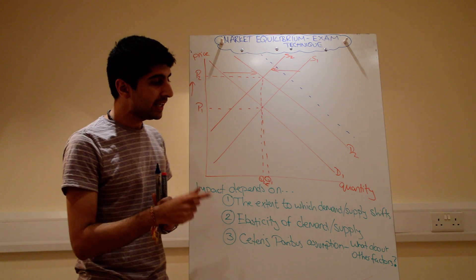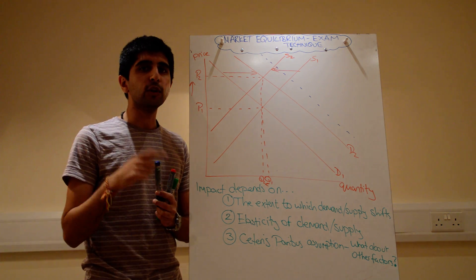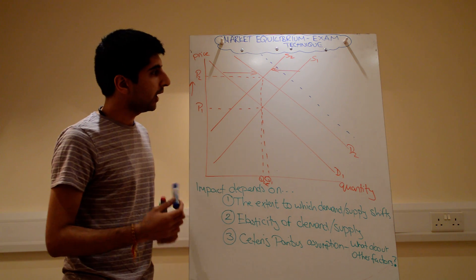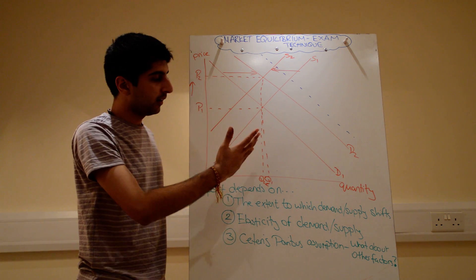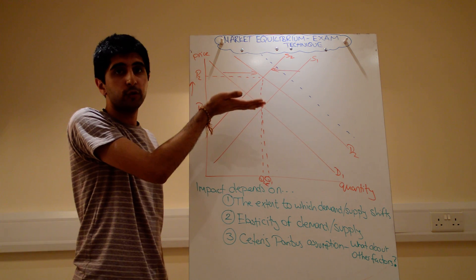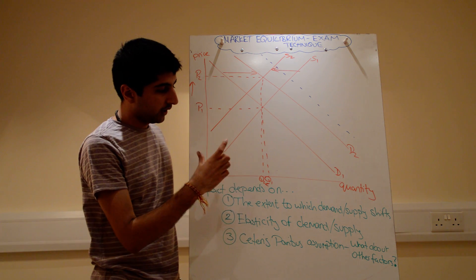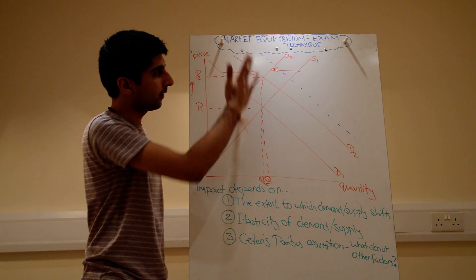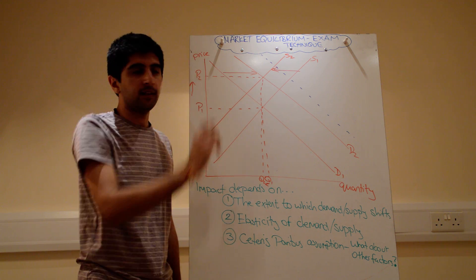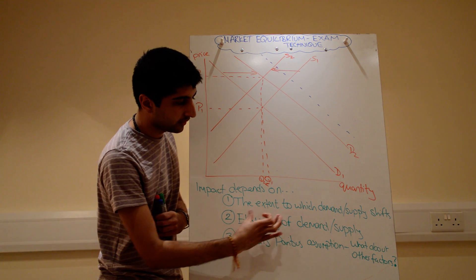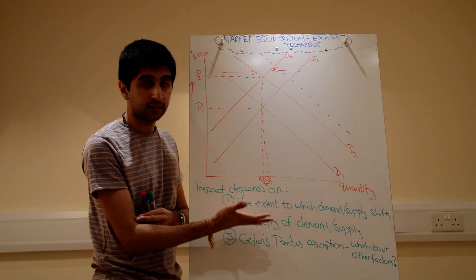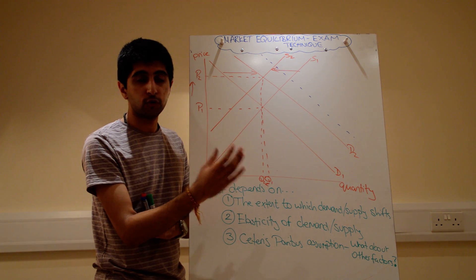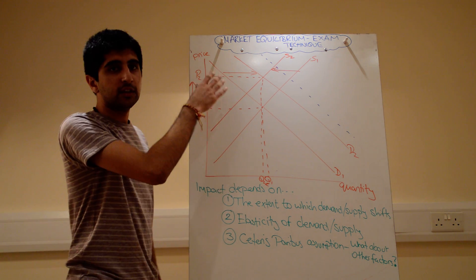The impact also depends on the elasticity of demand and supply — look at my video on elasticity if you're not sure what that means. It depends on how steep these curves are drawn. If curves are drawn more steeply, the effect on quantity would be very, very small, whereas the effect on price would be much larger. Explain how the effect depends on the elasticity of demand and supply — for example, if the demand curve is drawn more steeply, so demand was more inelastic, the price change would have gone up more greatly.